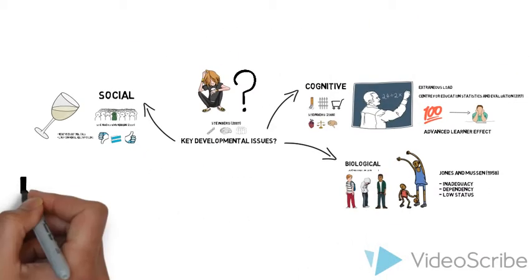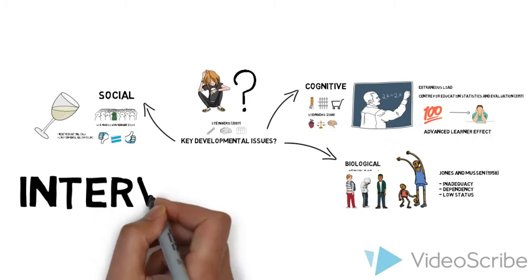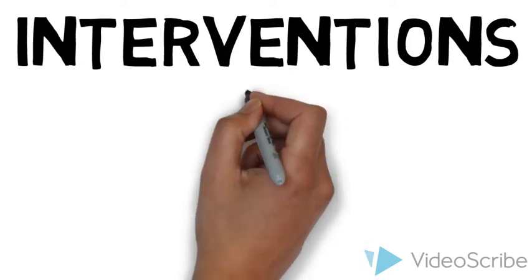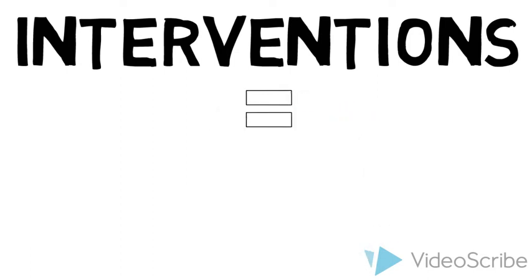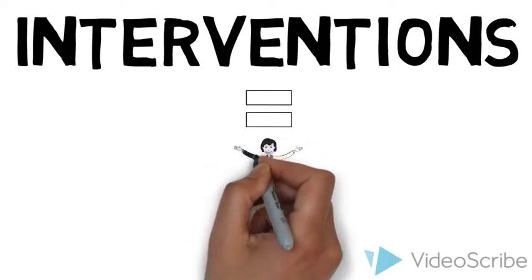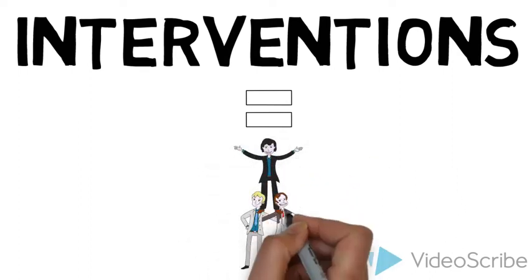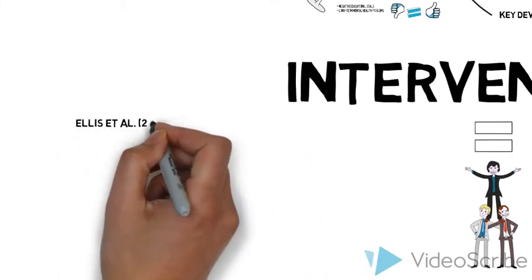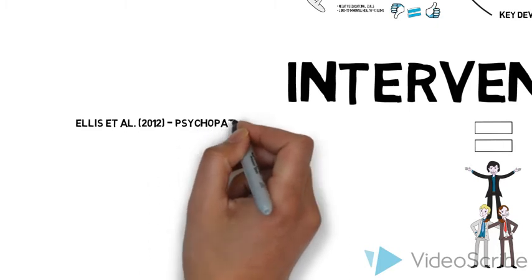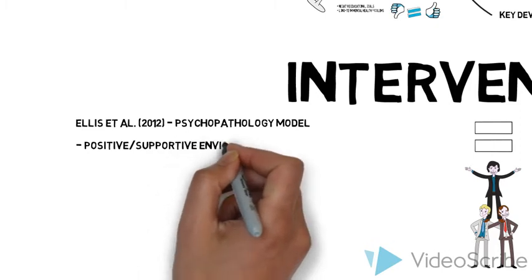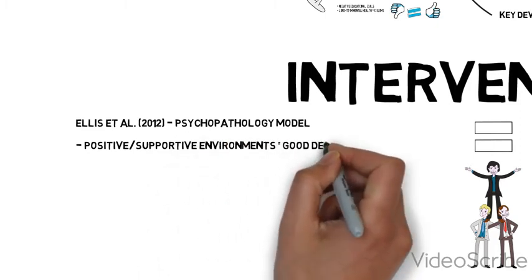Now that we have examined Dylan's key developmental issues, let's explore potential interventions. Considering Dylan wishes to excel in his studies to receive a scholarship, it is imperative to implement interventions that the family and school could utilize to help Dylan. According to Ellis and others, he believes the psychopathology model that promotes positive and supportive environments facilitates good developmental outcomes: happiness, security, attachment, emotional regulation and educational success.